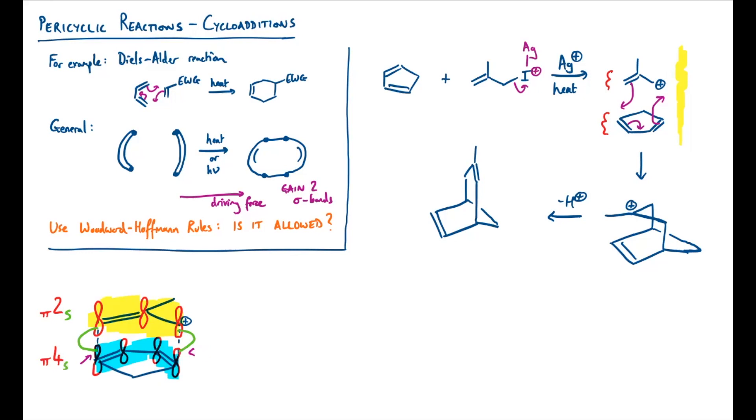The Woodward-Hoffman rules tell us that we need to look for systems that can be represented by labels that fit the pattern of 4q plus 2s, where q is an integer. This will be systems that have 2, 6, 10, 14 electrons that are suprafacial. And we also need to look for systems that follow this pattern, where r is an integer, that are antarafacial. This will be numbers like 0, 4, 8, etc.